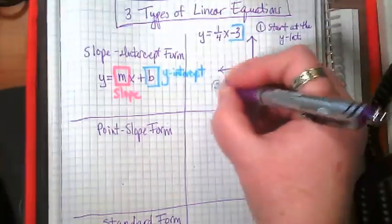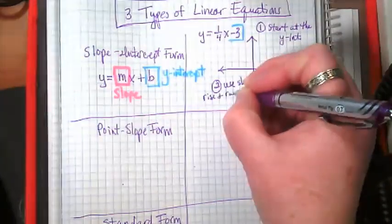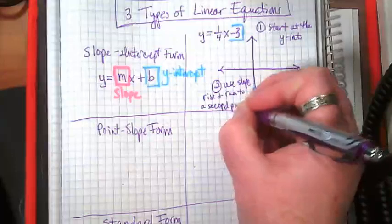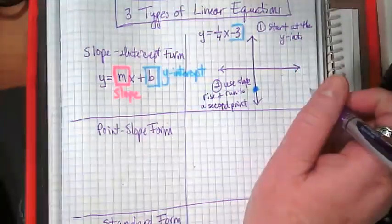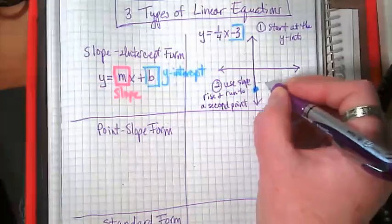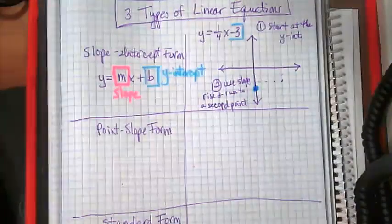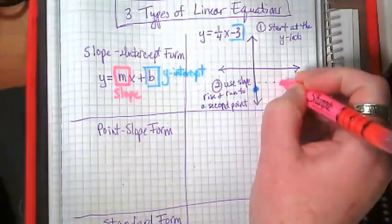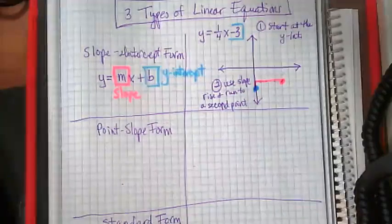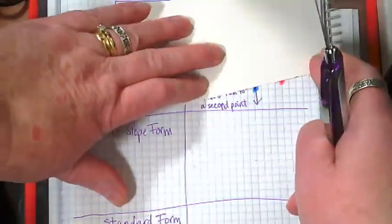That's always our first step. Our second step, we're going to use the slope to rise and run to a second point. What's our slope on this one? It's 1 over 4, so we're going to rise up 1 and run over 1, 2, 3, 4. I'm going to use my color for slope on this. And as long as I have two points on my line, I can draw my line.